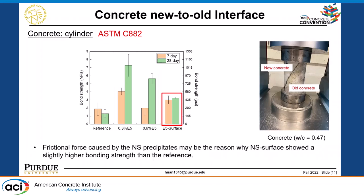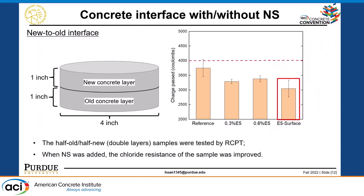As for the surface method, we believe that when we have a very high concentration of nanosilicate on the old concrete layers, the nanosilicate can precipitate. Due to the high concentration, the precipitation of nanosilicate particles can create friction force under compression and shearing between two interfaces. This process contributes to a higher bonding strength than the reference sample. So now we have the mechanical test result in terms of bonding strength. We move on to the durability test. For example, we designed double-layer concrete samples to test the rapid chloride penetration test.